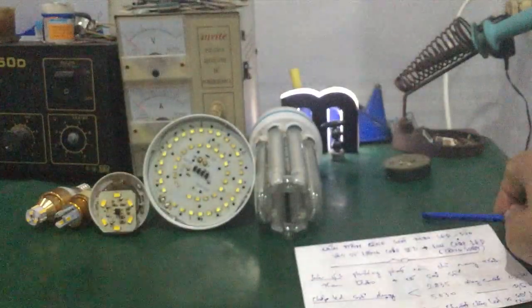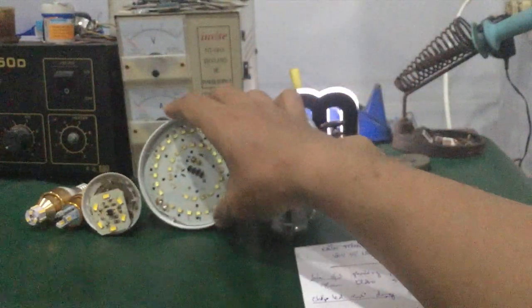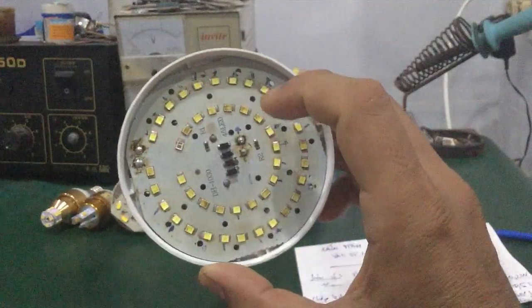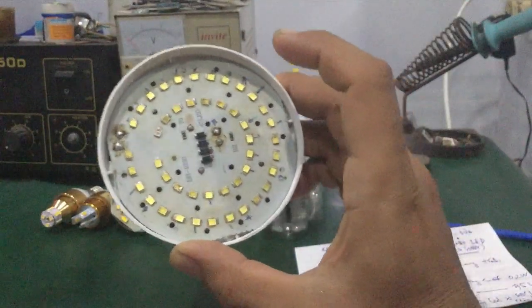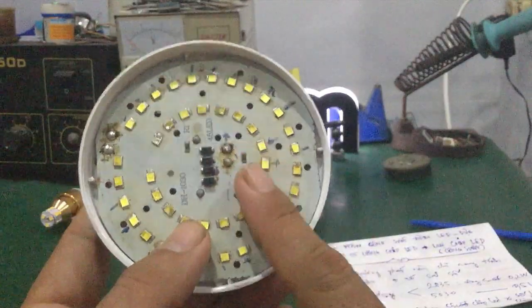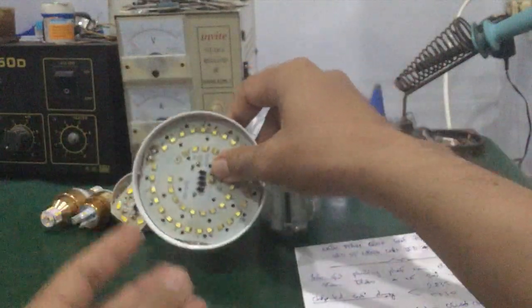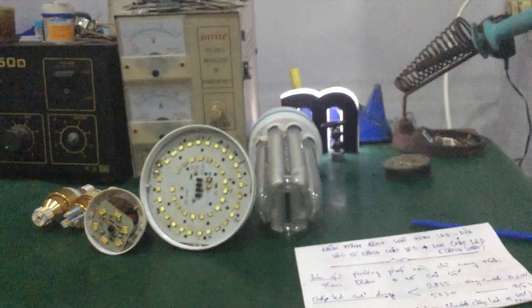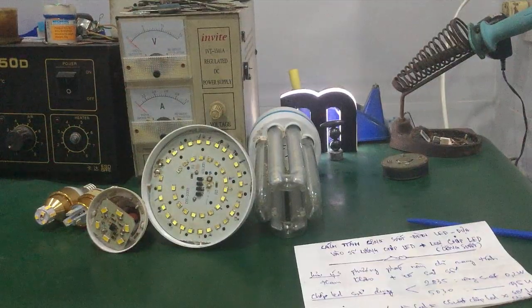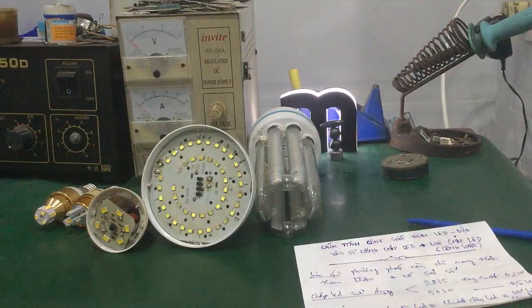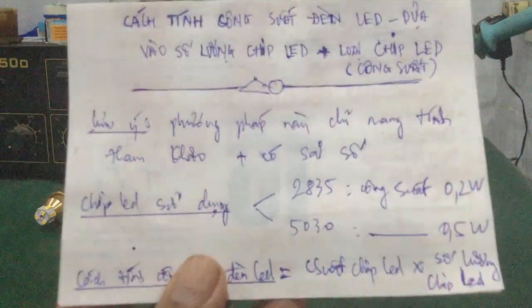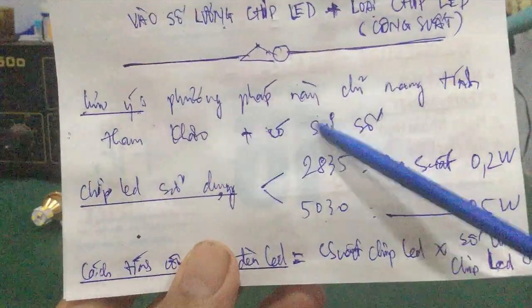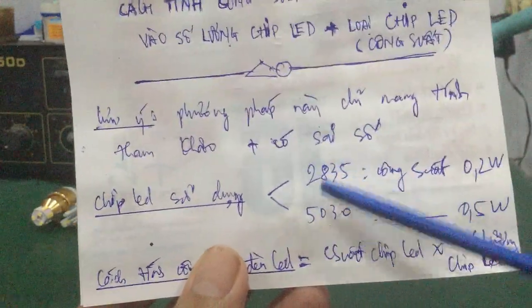Tất cả đèn LED thường có trên thị trường, nó sử dụng 2 loại chip LED nha. Thứ nhất là chip LED 2835, và thứ hai là chip LED 5030. Trên thực tế có rất nhiều loại chip LED mà người ta hay dùng, nhưng mà hai loại này là phổ biến nhất nha các bạn.